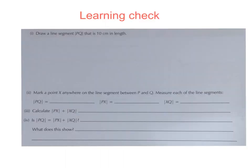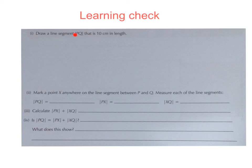For the learning check, draw a line segment PQ that is 10 centimeters in length in your copy. Then measure each of the line segments PQ, PX, and XQ — remember the difference between the different bracket notations. Calculate PX plus XQ and answer the question. See you tomorrow!